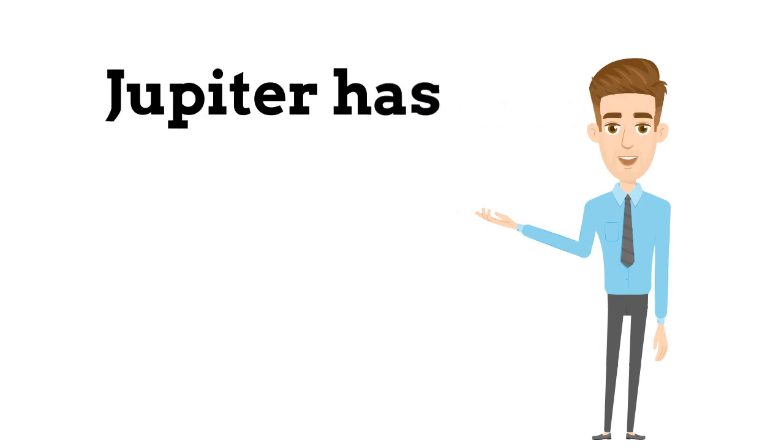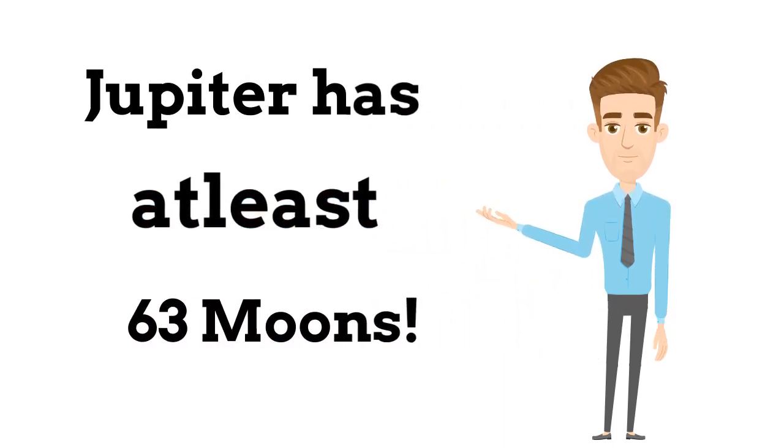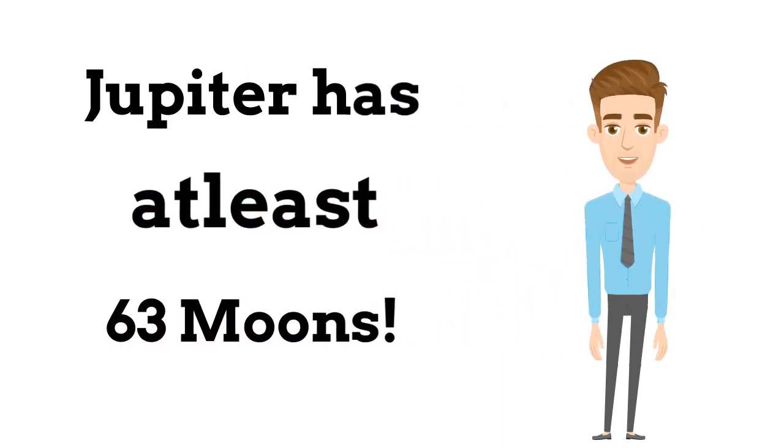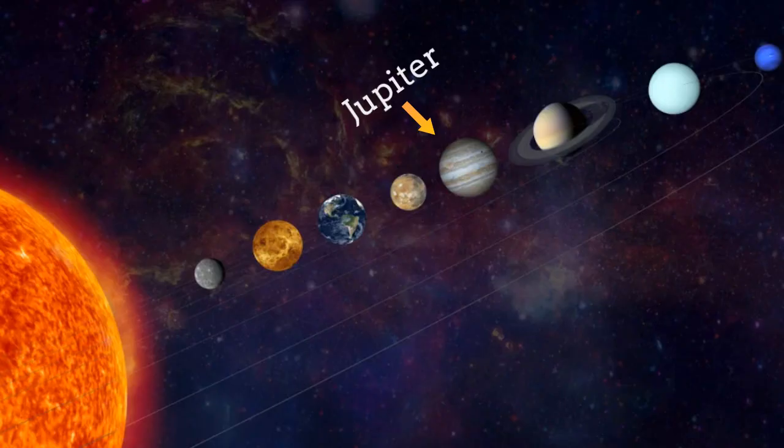Jupiter has at least 63 moons. We say at least because they still discovering more. So Jupiter is the giant, gas planet which is in between Mars and Saturn.